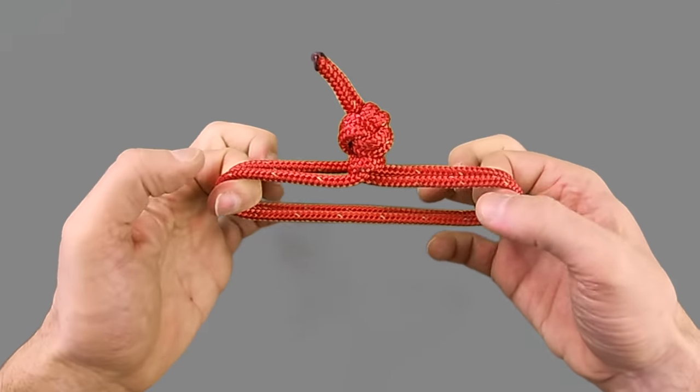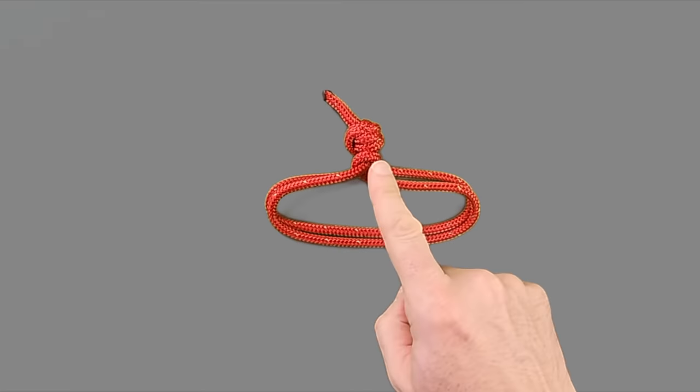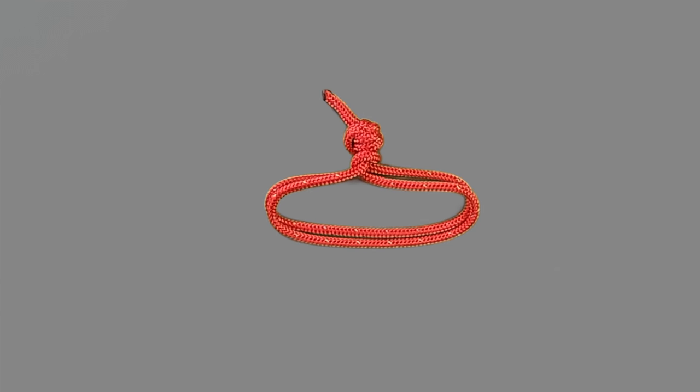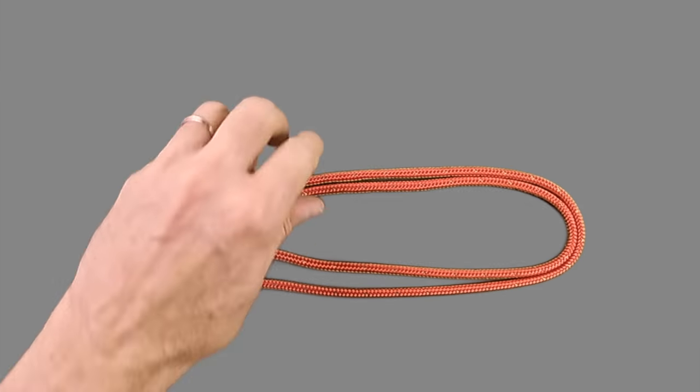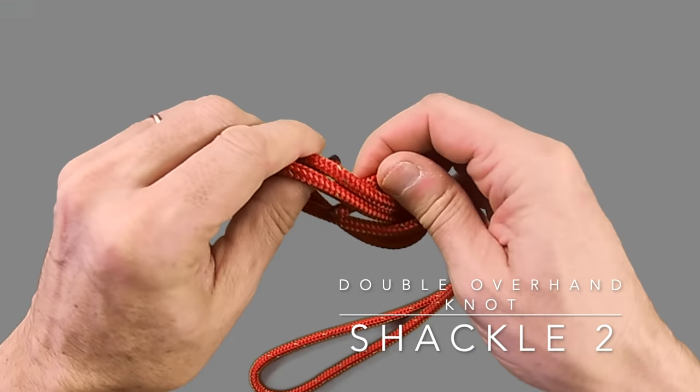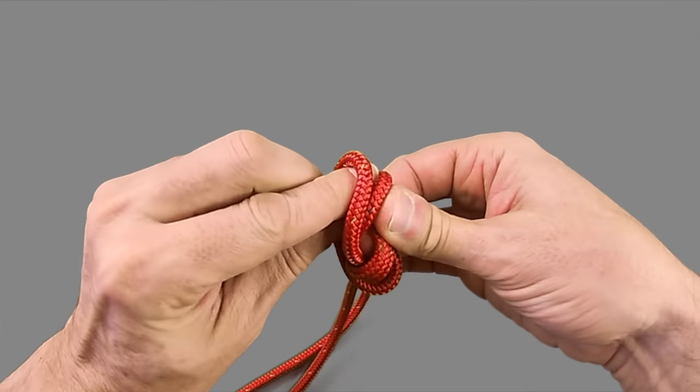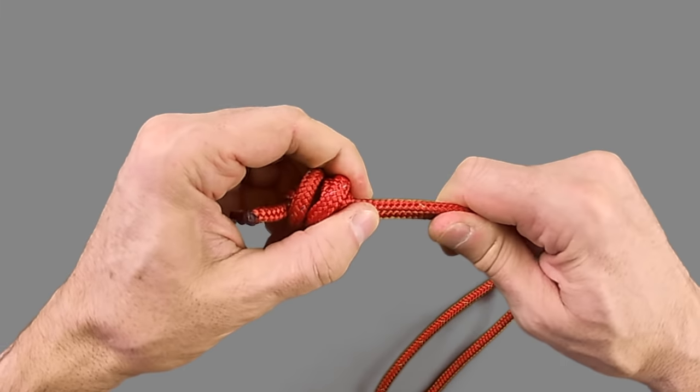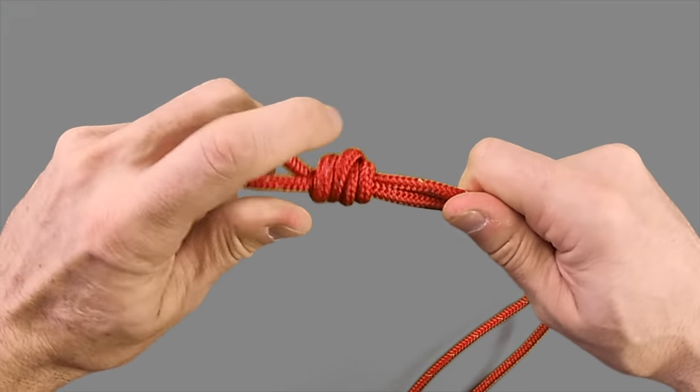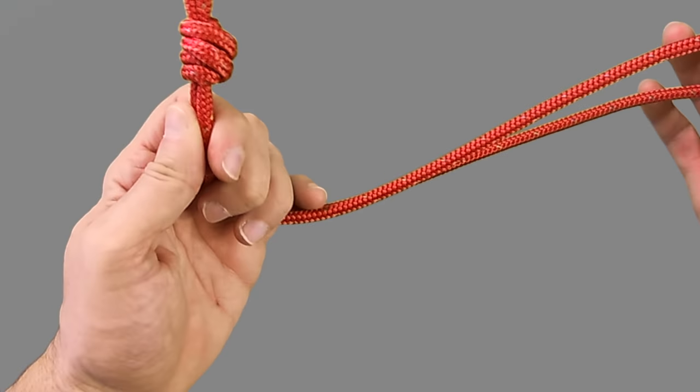Then simply pull the shackle tight and you have a much more secure finish to your soft shackle. The second version of this simple soft shackle that we're going to show today is similar to the first. This time however we're going to tie it with the double overhand knot. This is a great knot to tie if your rope is of a thinner diameter and you're worried about the size of your stopper knot at the end of the soft shackle.